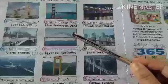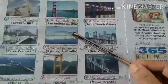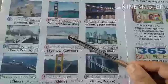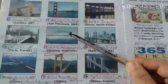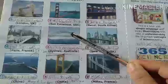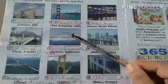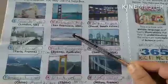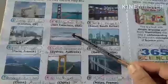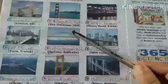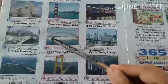This bridge is in Sydney, Australia. What is the name of the bridge? The fifth bridge — this bridge's name is Sydney Harbour Bridge. Sydney Harbour Bridge.